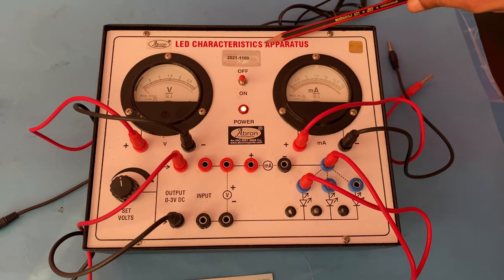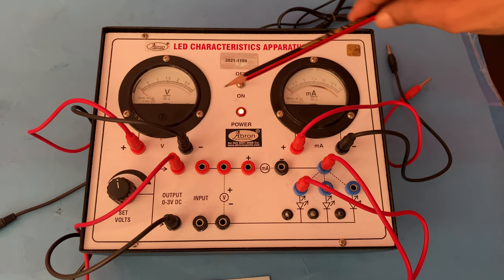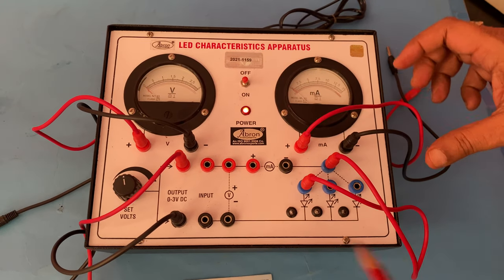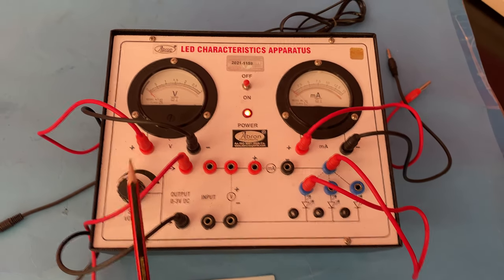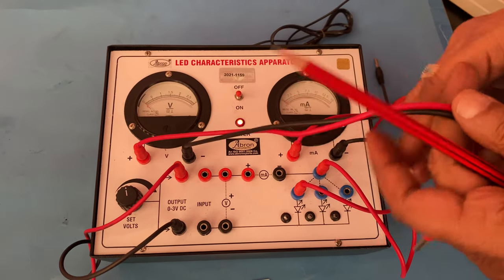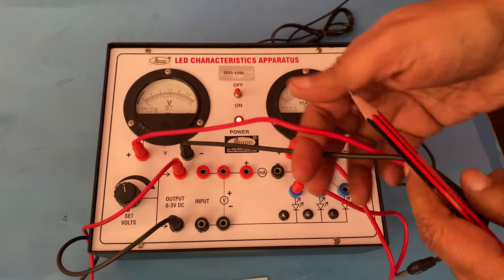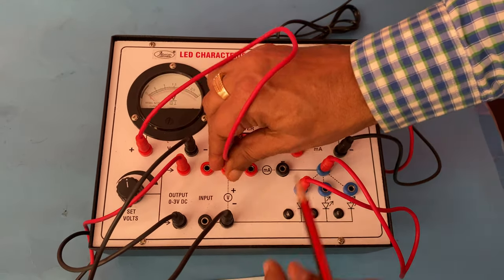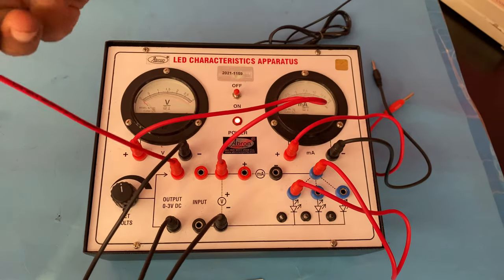This is a training instrument for LED characteristics - how much voltage is needed to start the LED. The circuit is very easy. This section is the power supply where you have to connect the voltage. I am putting this voltmeter on V, and current is assigned here, and the power supply